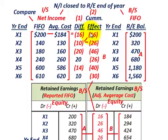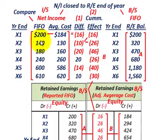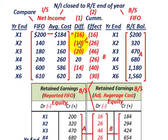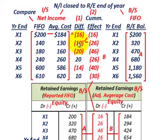We want to look at the cumulative effect over these six years so we know what we have at the beginning of year X7 when we make this conversion. For year X2, FIFO net income was $140,000 versus average cost of $130,000 — a difference of negative $10,000. Adding to the previous negative $16,000, the cumulative effect at the end of year X2 is now $26,000.